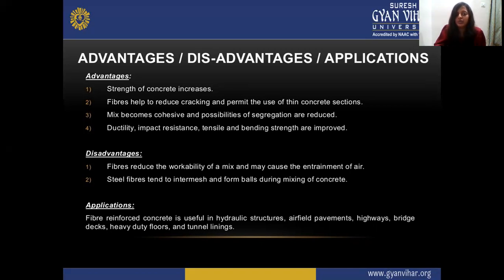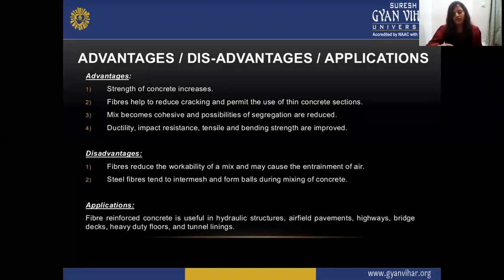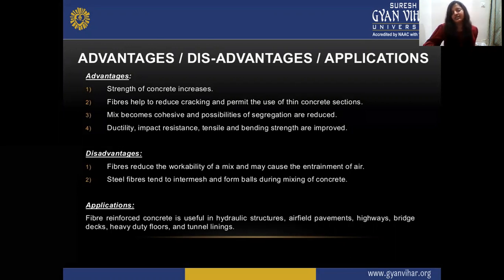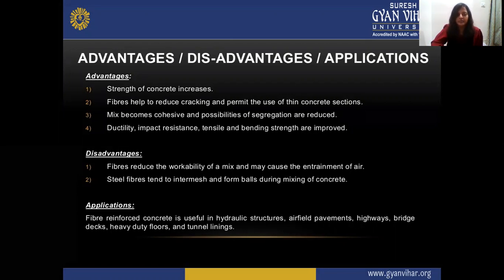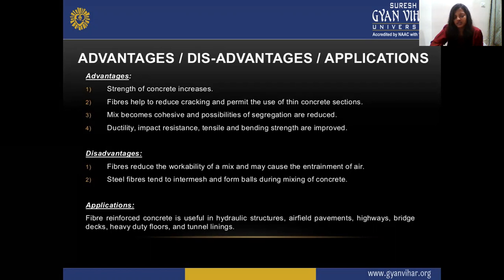Disadvantages: fiber reduces the workability of the mix and may cause air entrainment. If there is air entrainment, voids become weak spots where cracking or deterioration may occur, so proper compaction is required. Steel fibers tend to intermesh and form balls during mixing of concrete — they have a tendency to coil among themselves forming unnecessary notches, which is undesirable. Usually glass mesh and other fibers are preferred instead.